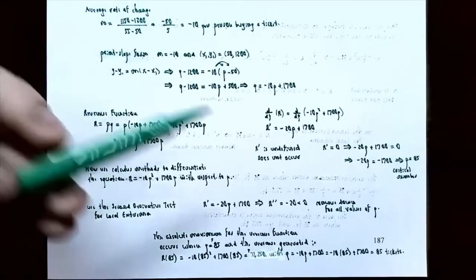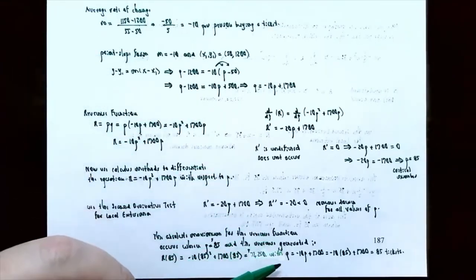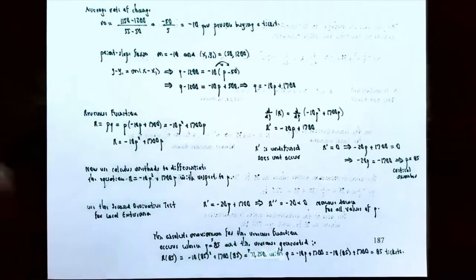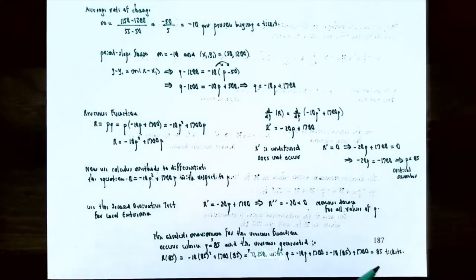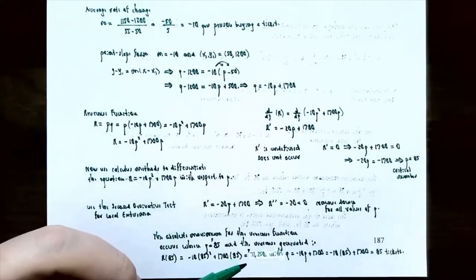We can also find Q. From the demand equation Q = −10p + 1700, replacing p with 85: Q = −10(85) + 1700 = 850. So if the concert promoter sells 850 tickets at $85 each, they will have a maximum revenue of $72,250.